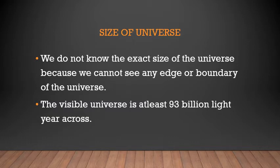Have you ever wondered what is the size of the universe? We do not know the exact size because we cannot see any edge or boundaries of the universe. We are part of the universe, so to see it from outside is very difficult. Large, huge telescopes are used to measure the size of the universe. The visible universe is at least 93 billion light years across. We can only make out the visible part — the universe is very, very huge and unimaginable.